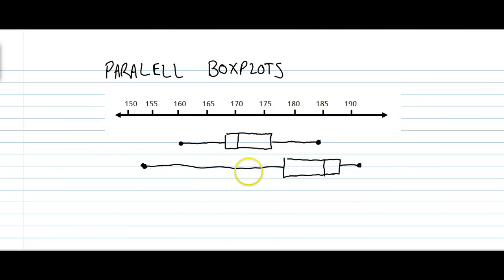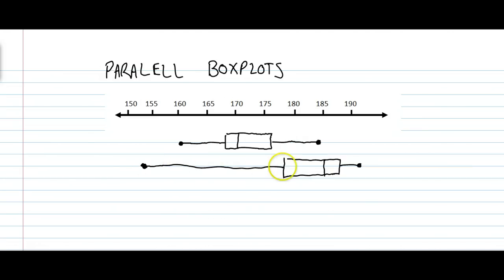Putting them side by side allows for easy comparisons. We can see that the range for the upper box plot — from the minimum to the maximum — is shorter than for the lower one, which has a bigger range. For the median, the median for the upper box plot is just above 170, whereas the median for the other data set is way up at 185. The lower quartile of the lower box plot is spread over a huge range of values, while the interquartile range is squashed up in the upper area, whereas for the other data it's more spread out and the median leans toward the lower end.